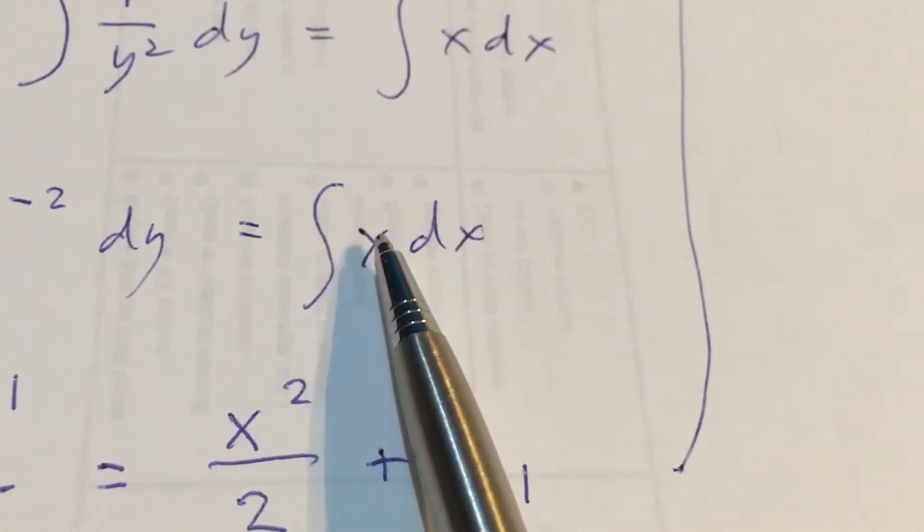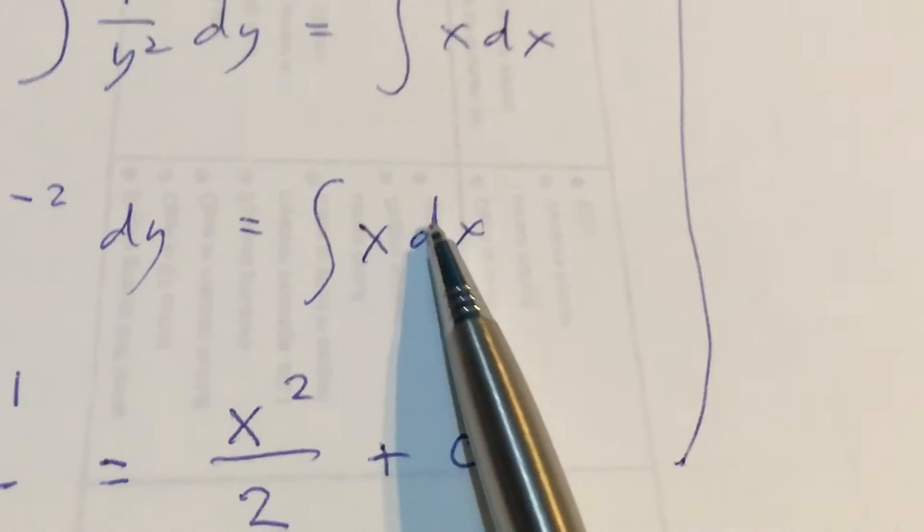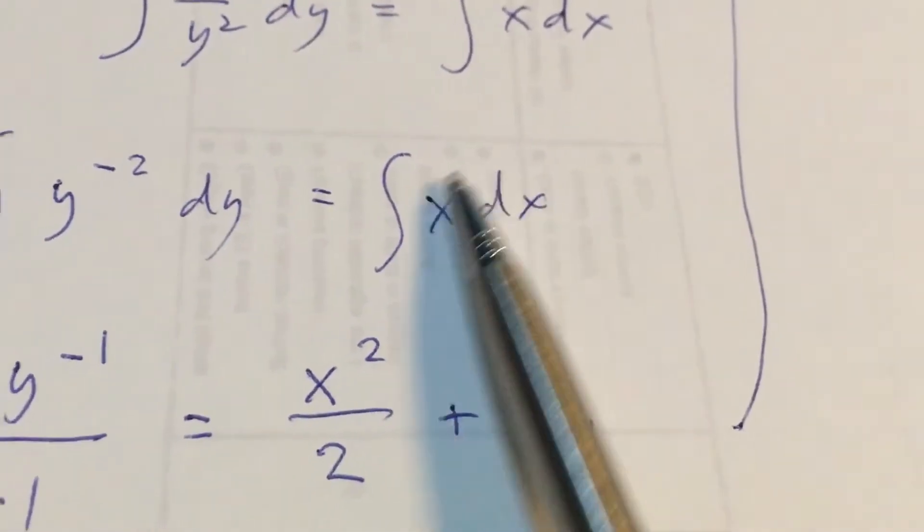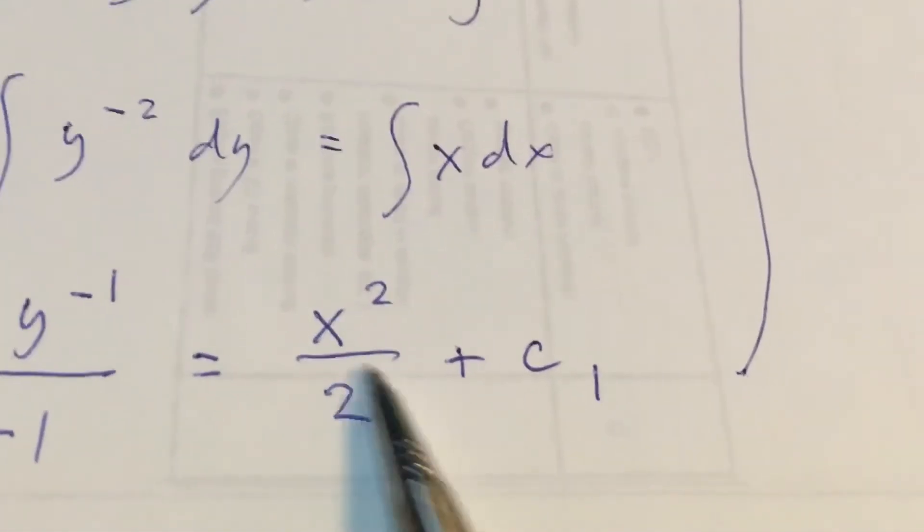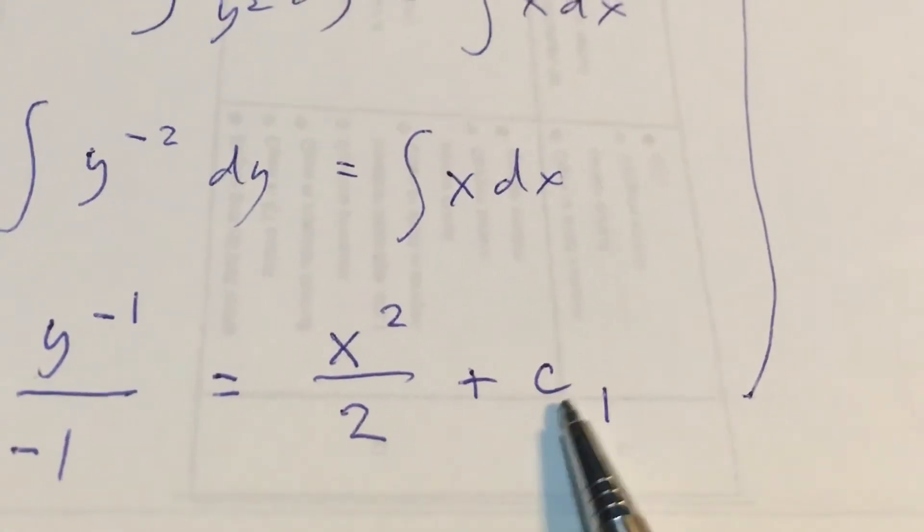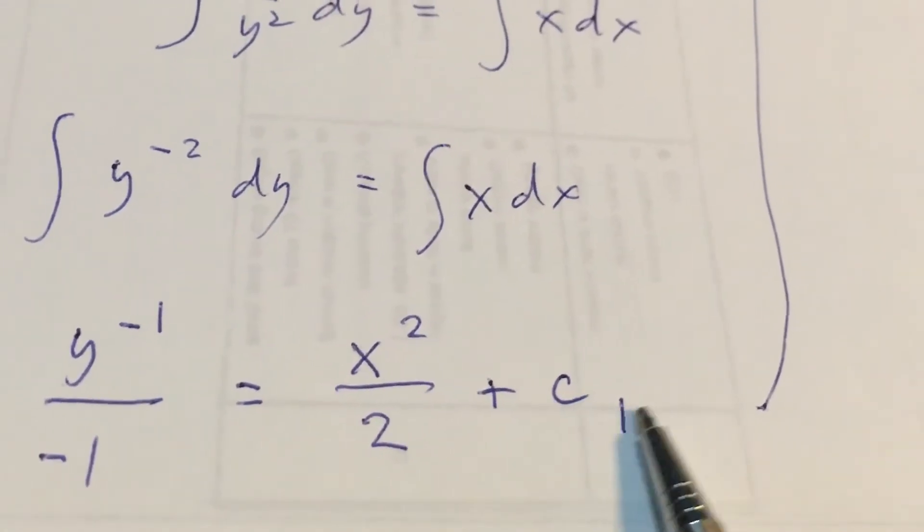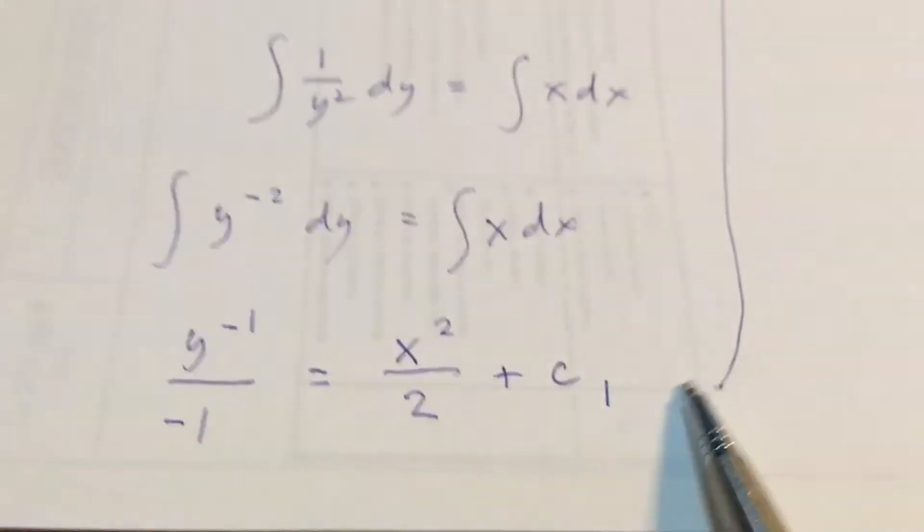In this part of the equation, 1 plus 1 is equal to 2. So copy the number 2 and put it at the denominator. And don't forget to put the plus C, plus C1 or plus C.